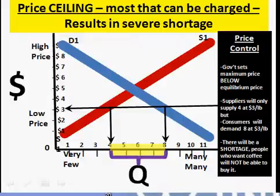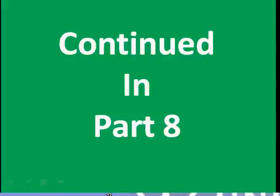So understand that a price ceiling is the very most that can be charged for an item or service, and it results in a severe shortage — the opposite of what we had with the price floor, which resulted in a severe surplus. We'll continue our discussion of supply and demand in Part 8. Thank you.